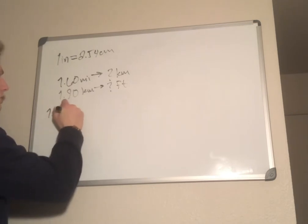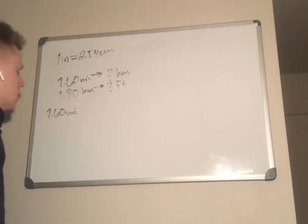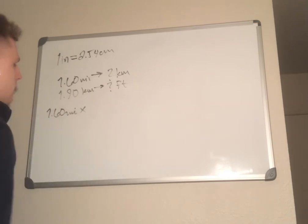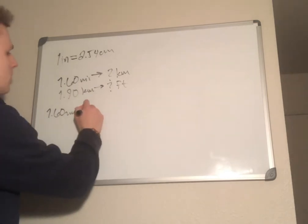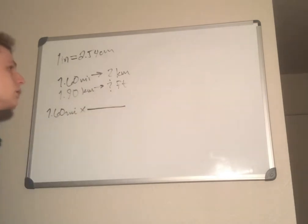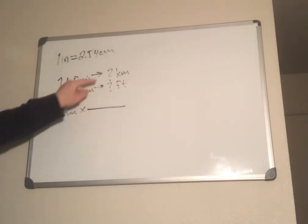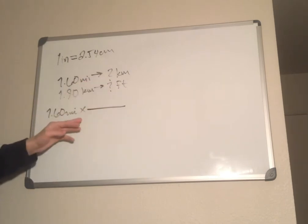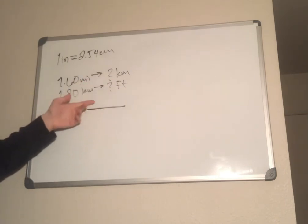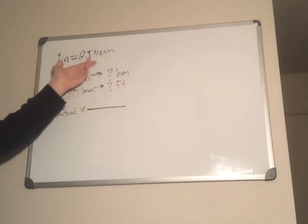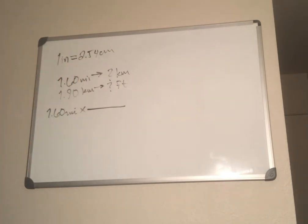Here's 1.60 miles — we multiply that by a proportion ratio. We can't just go straight from miles to kilometers. I mean we could if we had the numbers, but the problem obviously wants us to use the given conversion, otherwise it wouldn't have stated it.